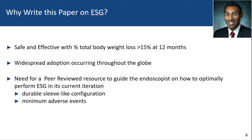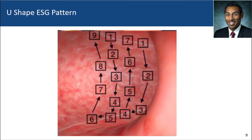When performing ESG you have two overarching goals. One is to create a durable sleeve-like configuration — durability most likely is related to achieving full-thickness bites and minimizing tension at each site where the suture goes through the gastric wall. Equally important is that the technique has a minimal adverse event rate. The U-shaped suture pattern involves starting on the anterior wall, coming across the greater curvature to the posterior wall, and then coming back towards the anterior wall. As the stomach gets wider more proximately, you end up needing more bites to achieve this goal.